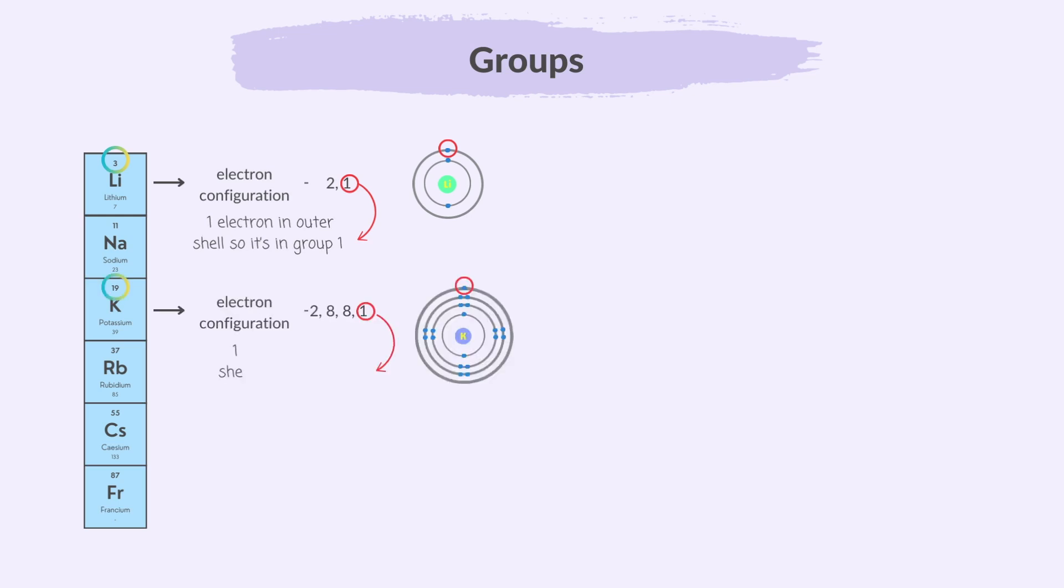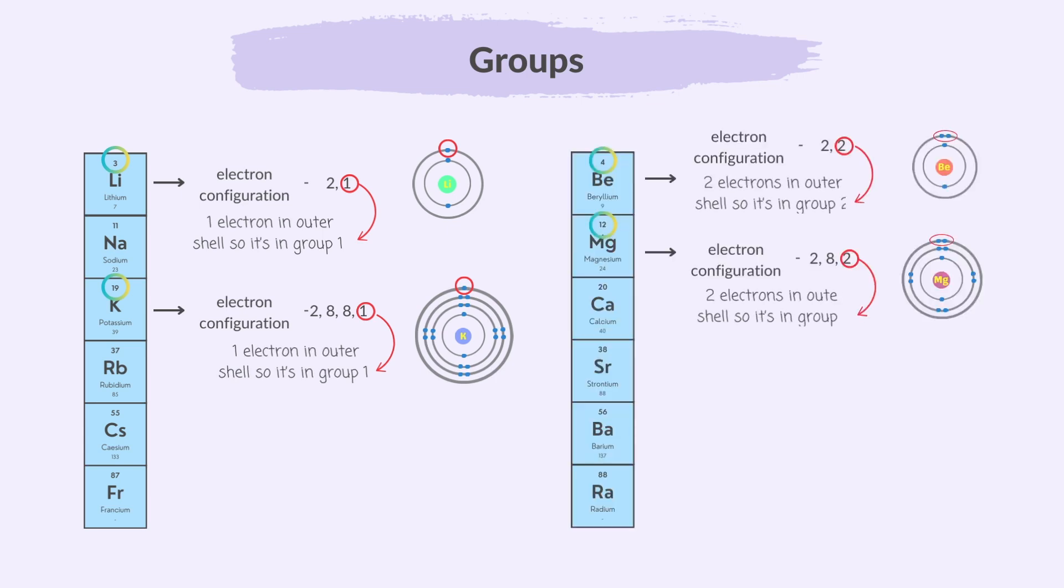So, group 1 elements have one electron in their outer electron shell. Group 2 elements have two electrons in their outer shell and so on. The elements in the last group, that is group 8 or group 0, however, are an exception to this rule, as they have two or eight electrons in their outer electron shell.